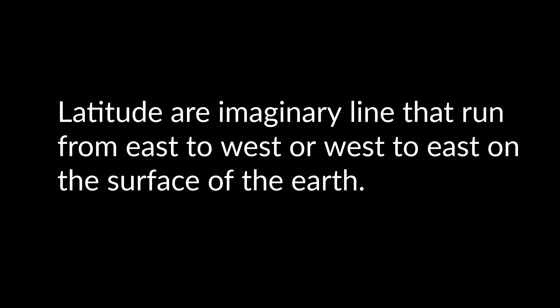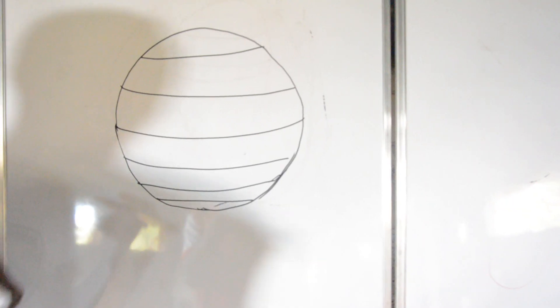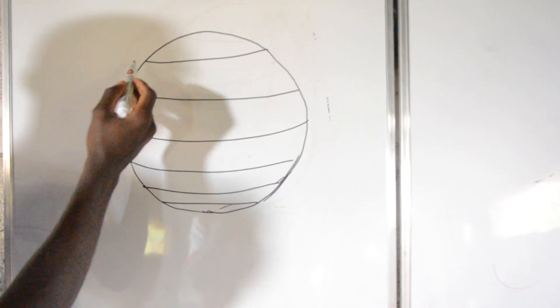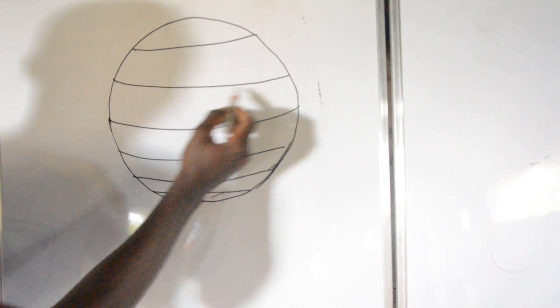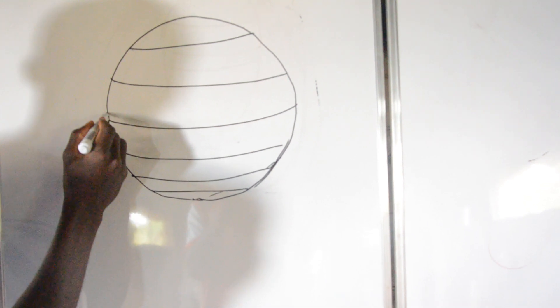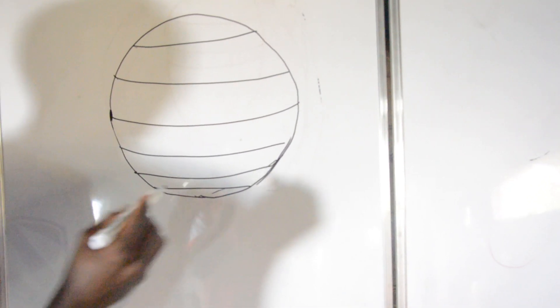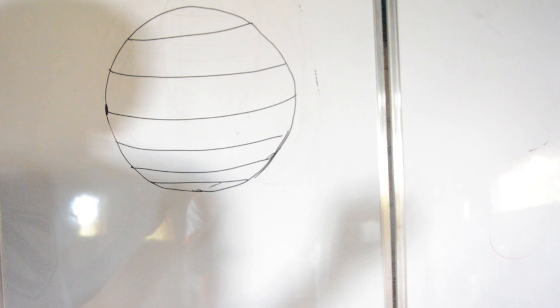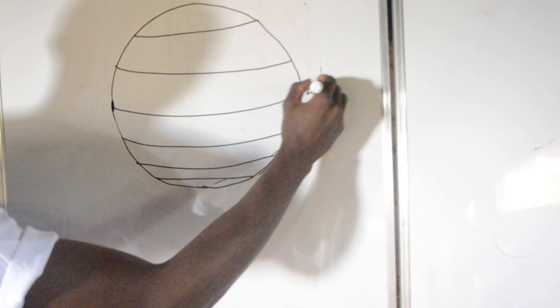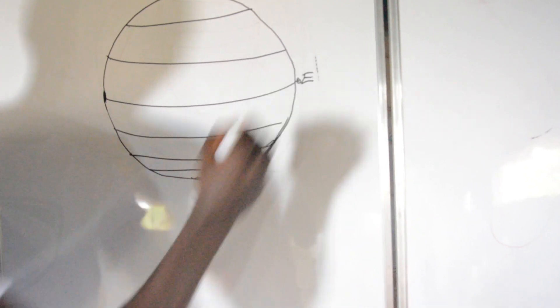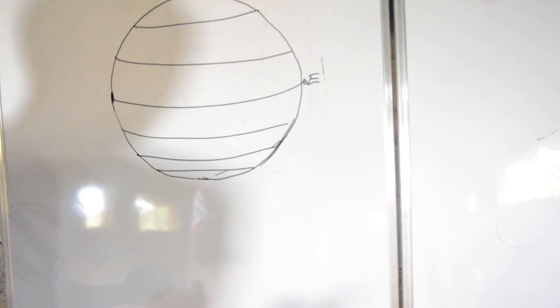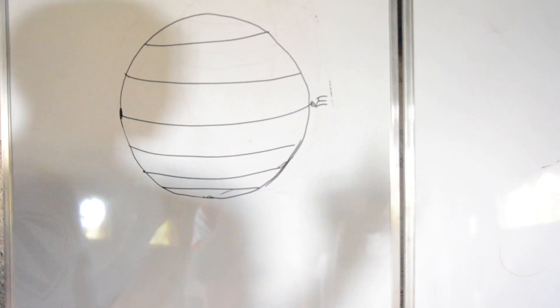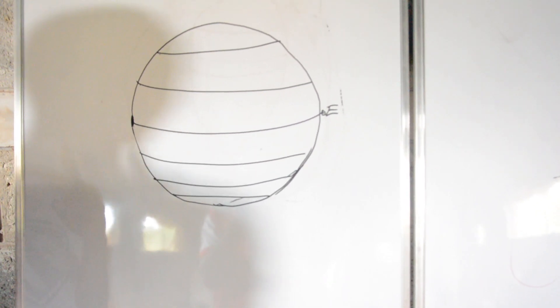The first thing you have to know: latitude is an imaginary line that runs from west to east across the earth. This here is a small circle, and this one — because it divides the earth into two — we call it a great circle. It's the equator, and it marks zero degrees. So we know that latitudes are imaginary lines that run from east to west across the earth.